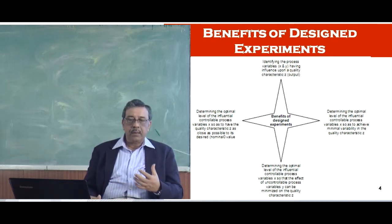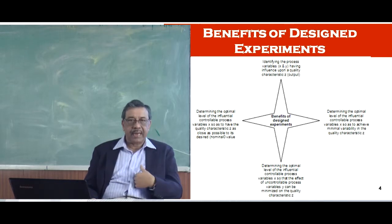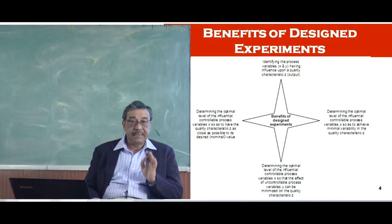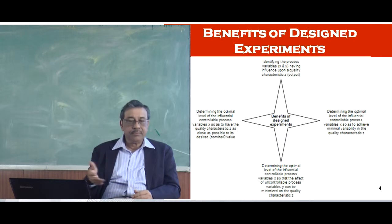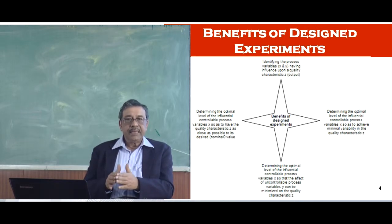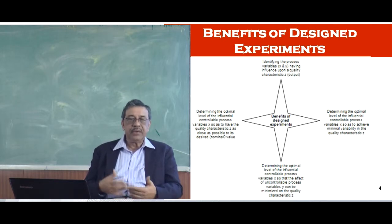So as to achieve minimum variability in the quality characteristic z. Controllable variable x is in our hand. That we can control. We will control it in such a way that the quality characteristics z, the variability in that is minimized. Variability in output is a very important thing in manufacturing process. Just to digress a little bit and tell you a story. Japanese manufacturing was so good in terms of variability that they were many times better than what the specification called for.